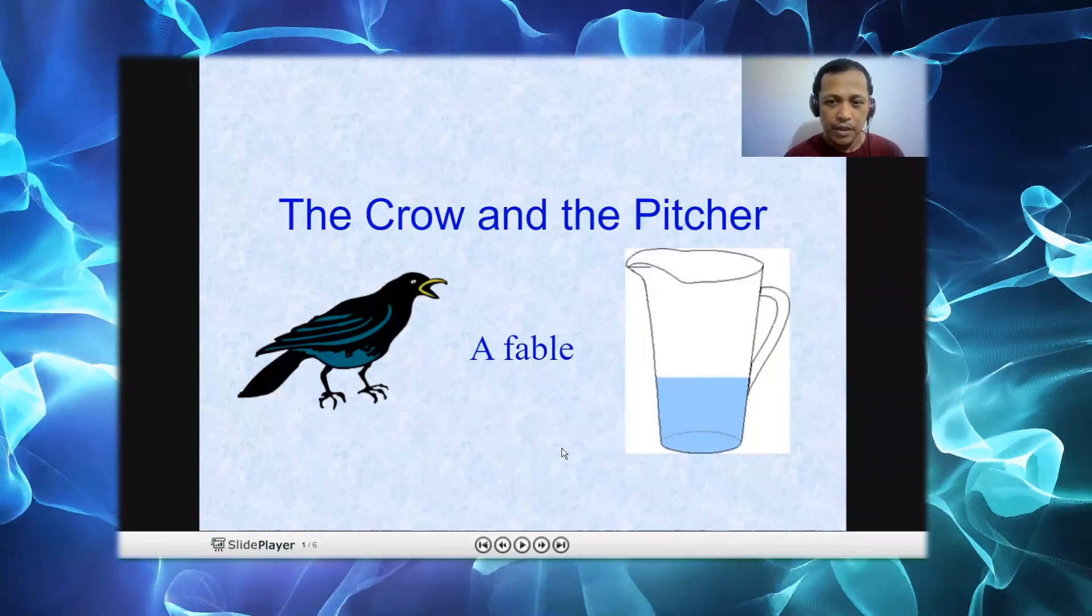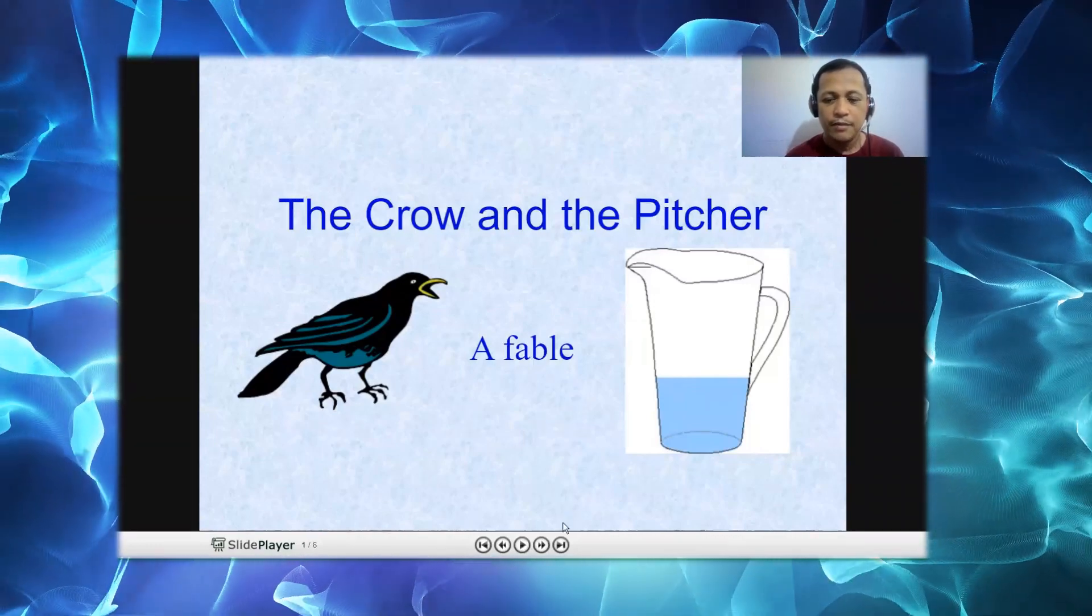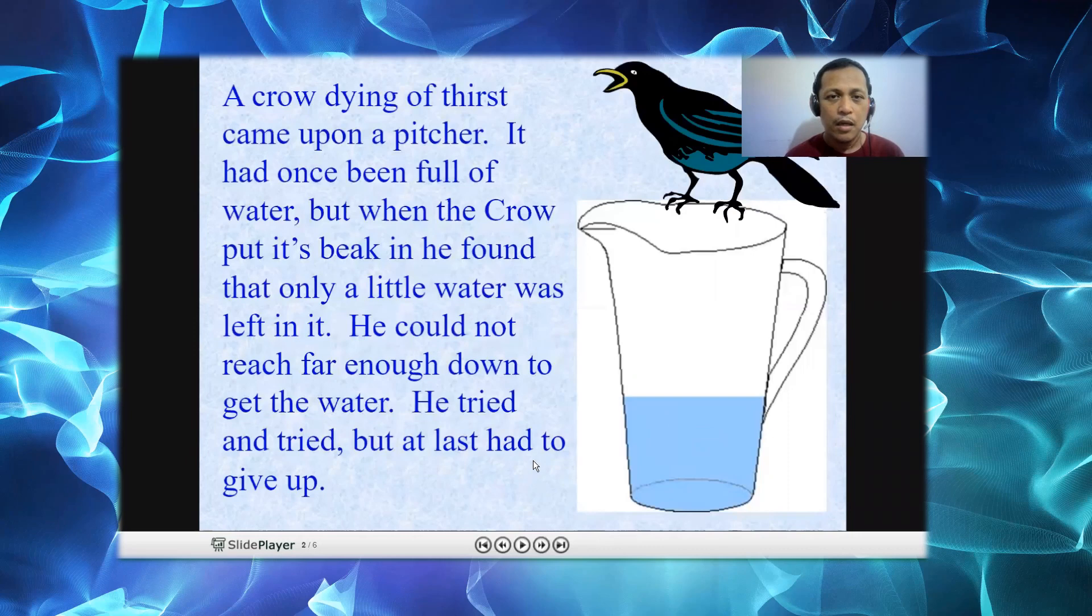The Crow and the Pitcher, a fable. A crow dying of thirst came upon a pitcher. It had once been full of water. But when the crow put its beak in, he found that only little water was left in it. He could not reach far enough down to get the water.